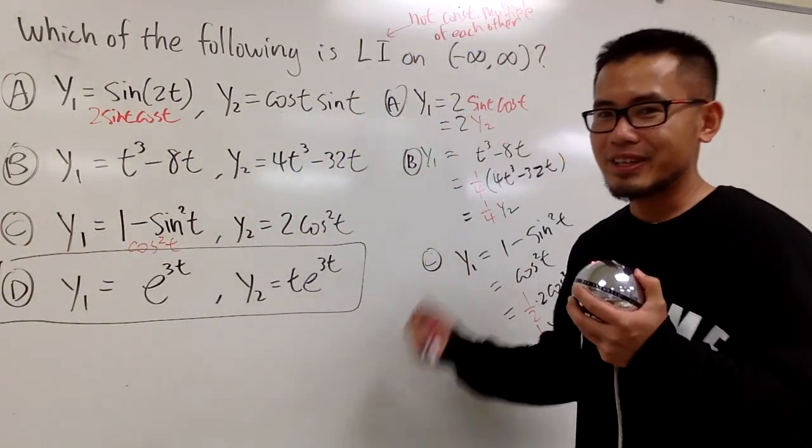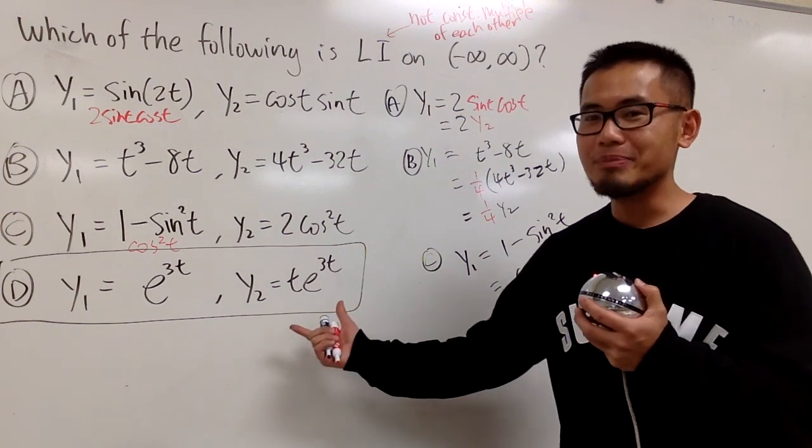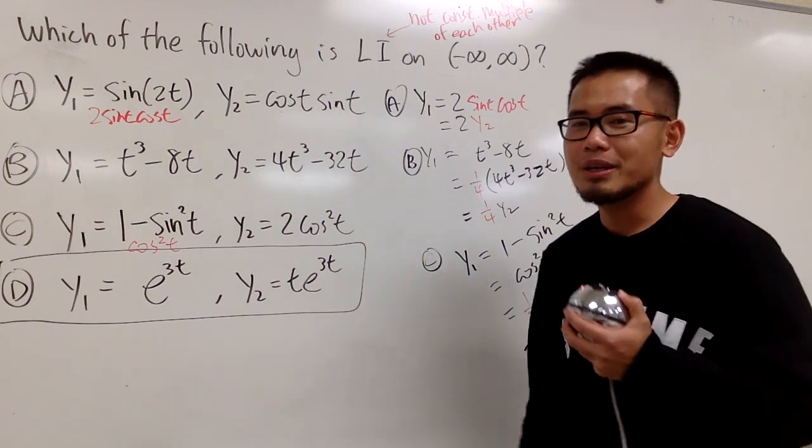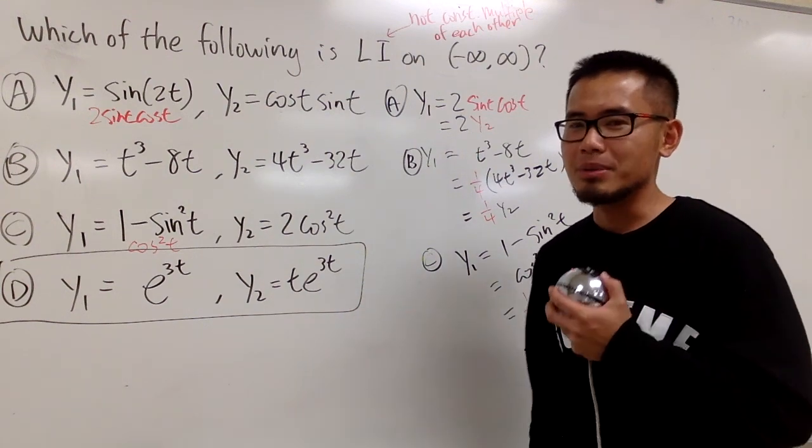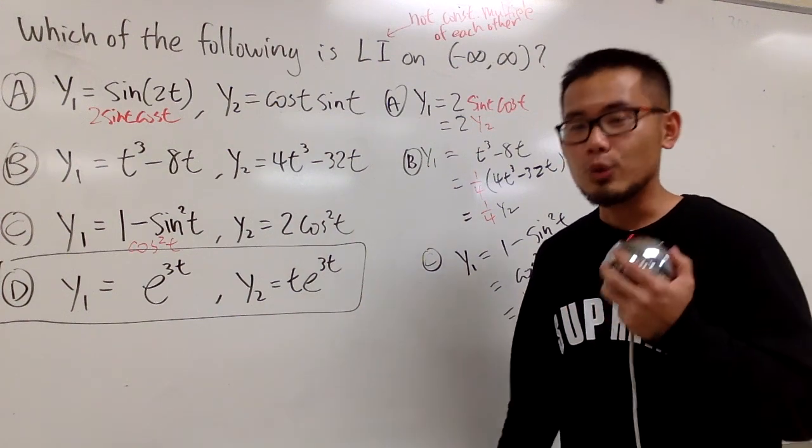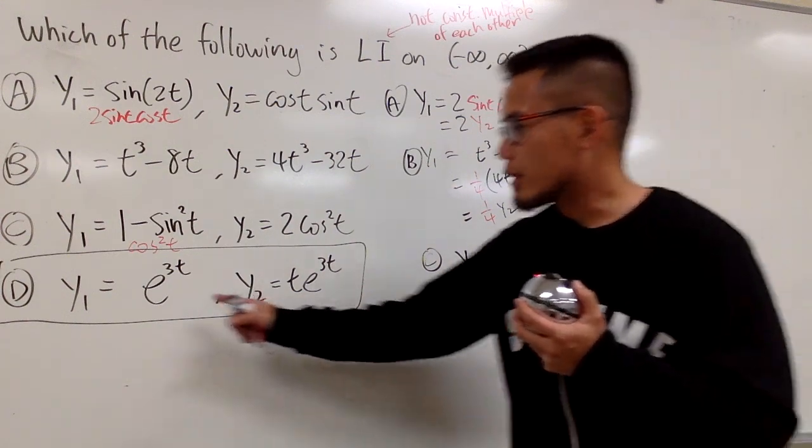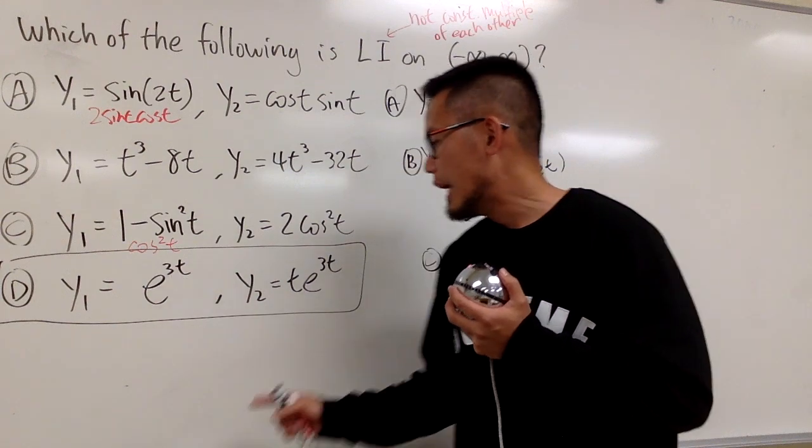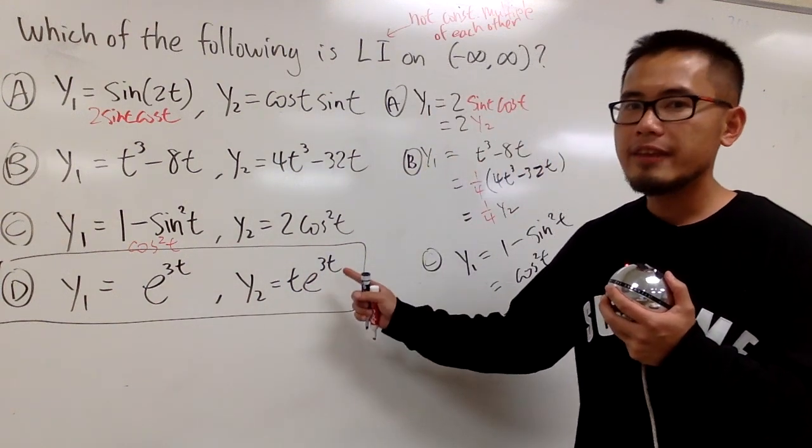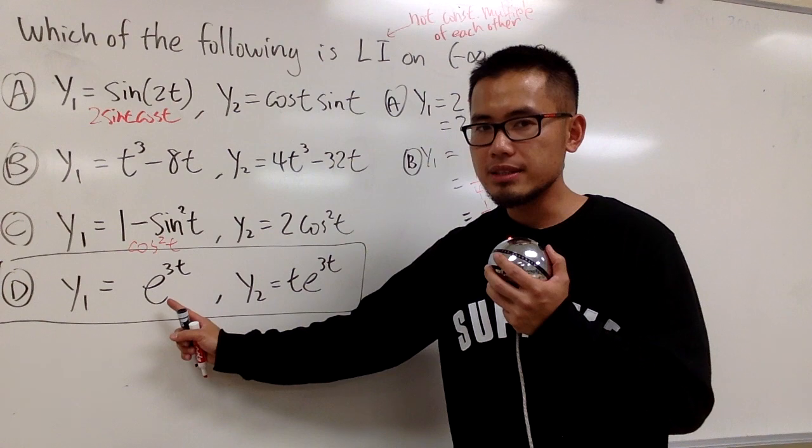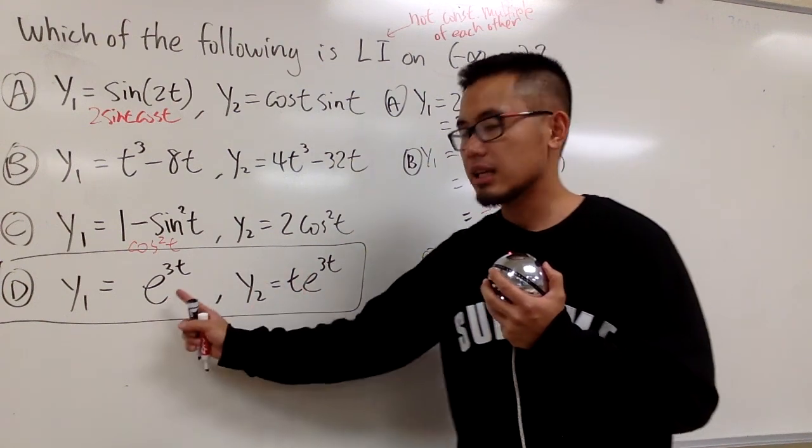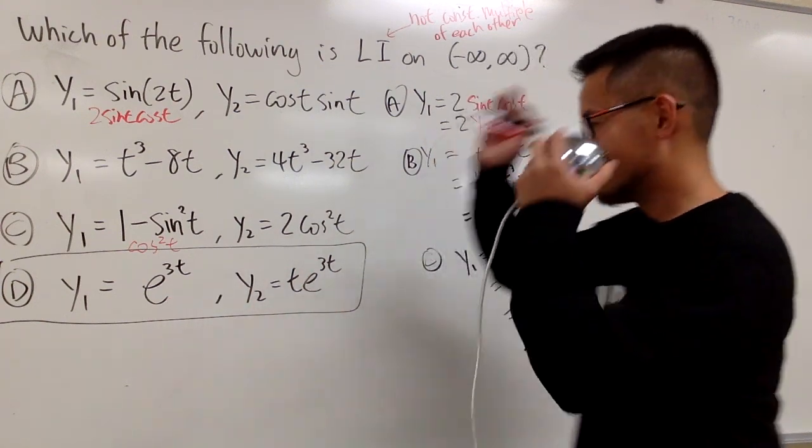This is good, it's bad. It's good because that's the answer, because it's not a constant multiple. It's bad because it's not constant multiple, because it's not linearly dependent, whichever you want to look at. Once again, e to the 3t and te to the 3t, they are linearly independent because they are not constant multiples of each other. That's it.